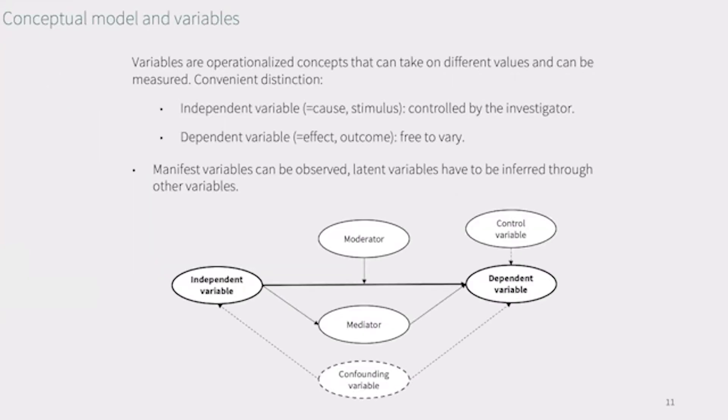Conceptually, experiments are usually made up of different variables or attributes with hypothesized links in between them. Variables refer to concepts that can take on different values and that have been operationalized so they can be measured. An example may be a person's purchase probability from 0 to 100%. Researchers often distinguish between independent and dependent variables.